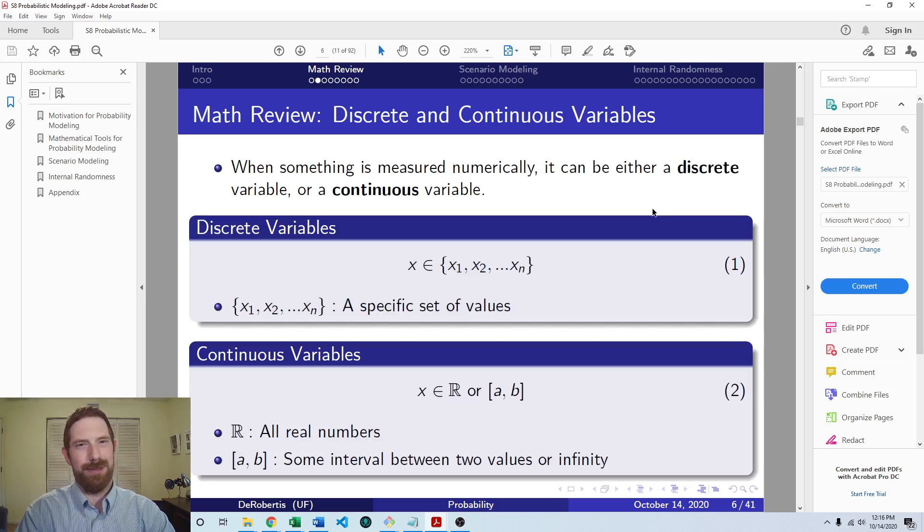So the first concept we'll look at here is about random variables and whether that random variable is discrete or continuous. So discrete variables are having a certain set of values. It's one of a certain set of values, whereas continuous variables are defined by a range. It's between two values and it can be any number between those two values.